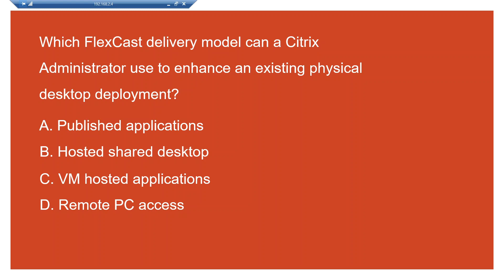If you selected D — Remote PC Access — then you are absolutely right. When creating a machine catalog, you get three options: Desktop OS, Server OS, and the third one is Remote PC Access.